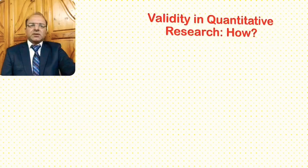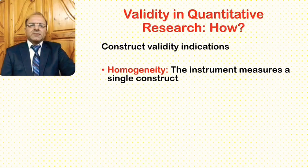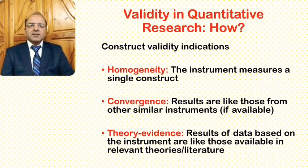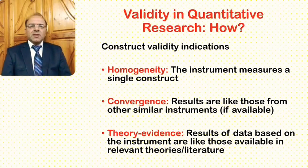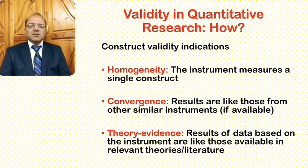We will also discuss some of the indications of construct validity — how would we know that a particular instrument has construct validity? There are certain characteristics or indications that could show that a particular instrument has construct validity. The first one is homogeneity, meaning the instrument measures a single construct. Generally, an instrument that measures a single construct rather than multiple constructs is considered homogeneous, and this adds to its construct validity.